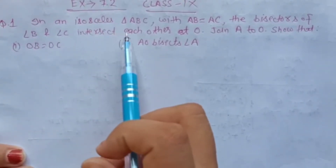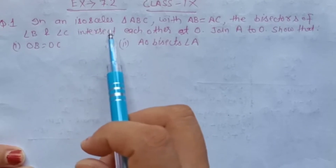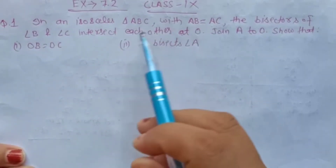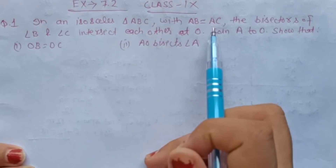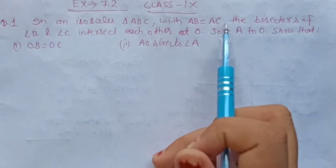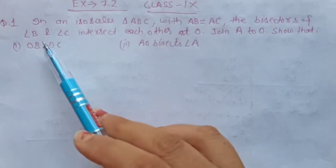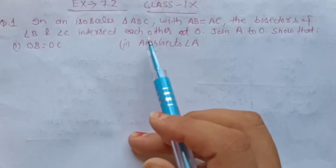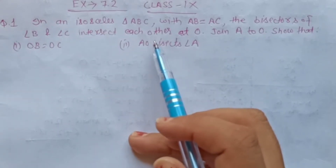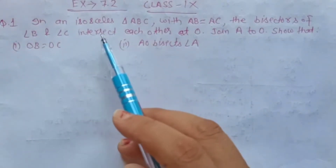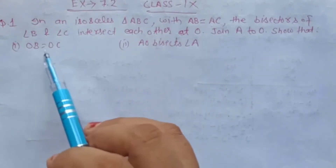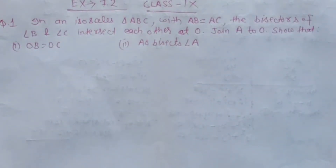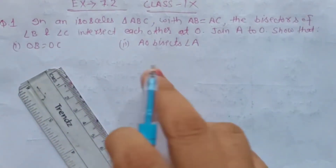In an isosceles triangle ABC with AB equal to AC. Isocel triangle means 2 sides are equal. AB and AC are the two equal sides. So the bisector of angle B and angle C intersect each other at O. We need to show something, so first we need to make a diagram.